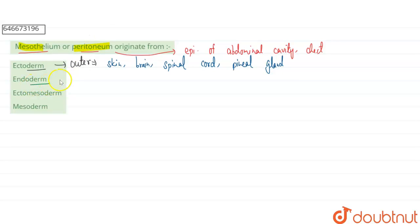The second option is endoderm. Endoderm is our inner germinal layer, and this endoderm can produce different organs like the colon as well as the stomach.